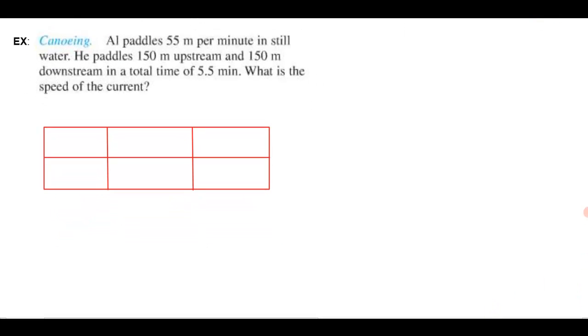In this problem it says that Al paddles 55 meters per minute in still water. He paddles 150 meters upstream and then 150 meters downstream in a total time of five and a half minutes. The question is what's the speed of the current?